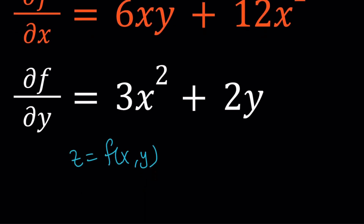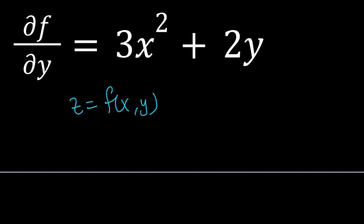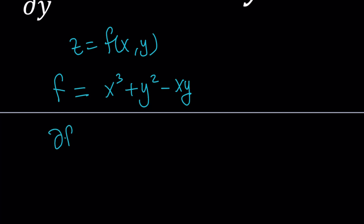Let me talk briefly about what that means. Suppose you have a function like f equals x cubed plus y squared minus xy. Then you can go ahead and partially differentiate this with respect to x. When you differentiate with respect to x, it just means that y is constant — you're going to treat y as a constant. When y is a constant, y squared is also going to be a constant, so the derivative of y squared is going to be zero.